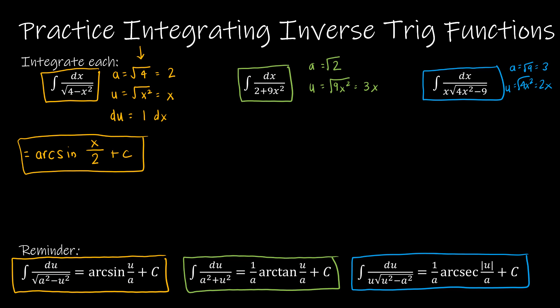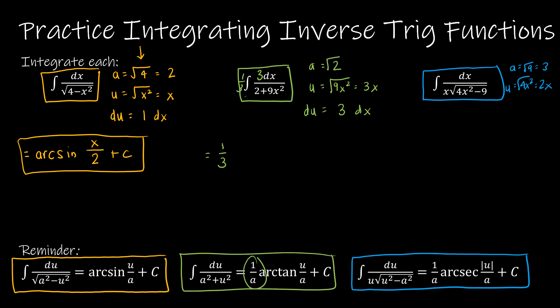For the second question, a is radical 2 and u is 3x. Now du is the derivative of 3x, which is 3 dx. This doesn't quite fit the pattern — I need a 3 dx, but I can't just randomly add a 3. If I add a 3 in the numerator, I have to divide by 3 outside the integral. So my solution is one-third times 1 divided by radical 2, times arc tangent of 3x divided by radical 2, plus c.